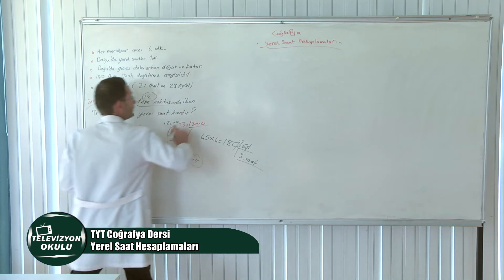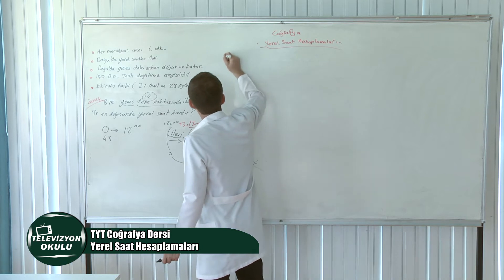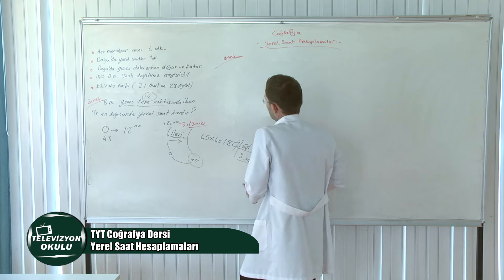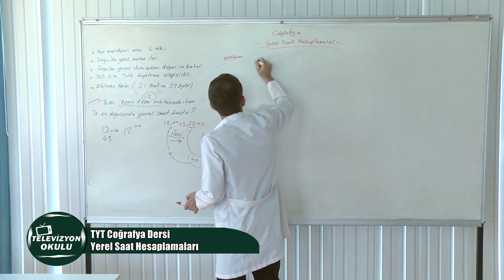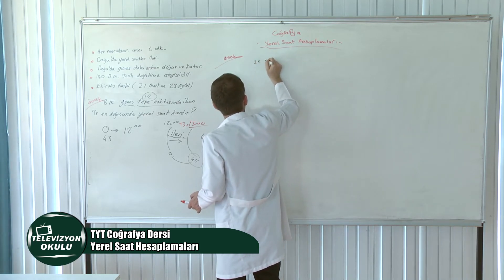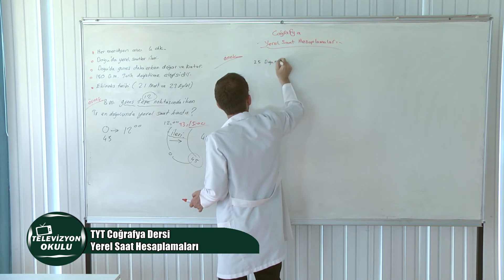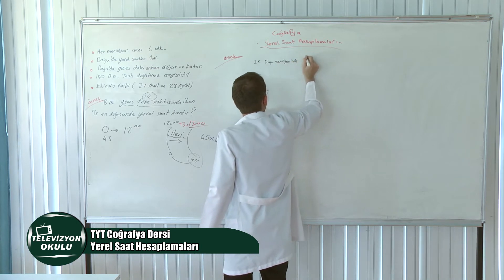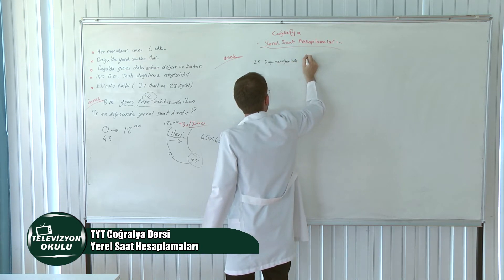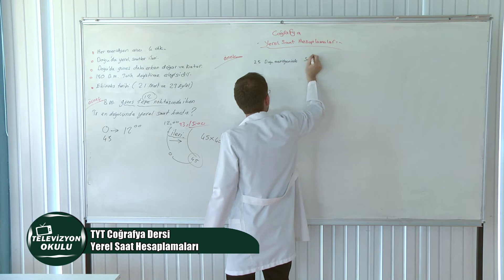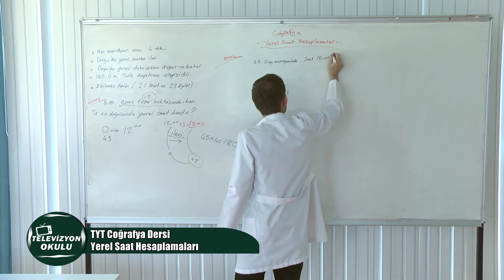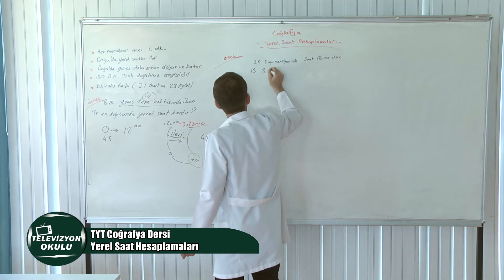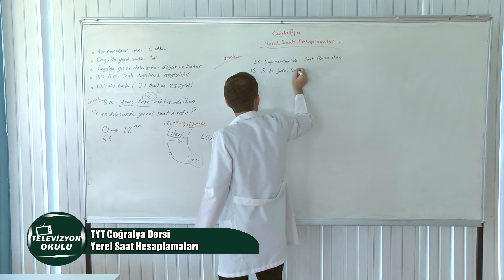Bir örnek daha yapalım. 25. Doğu meridyeninde saat 18.00 iken 15. Batı meridyeninde yerel saat kaçtır?